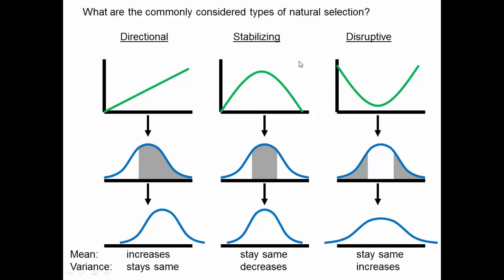This is stabilizing selection. If we plot fitness against a trait, the peak is at some intermediate value. If we then plot the distribution of individuals in the population, the individuals with intermediate trait values reproduce the most. So the mean of the trait won't change much after selection, but the variance would decrease — individuals with very low or very high trait values don't reproduce, so the next generation has more intermediate values. Stabilizing selection can be caused by trade-offs and is one of three basic types of natural selection.